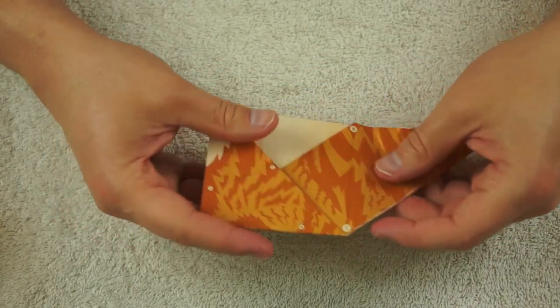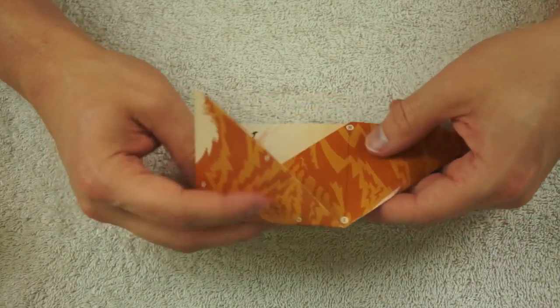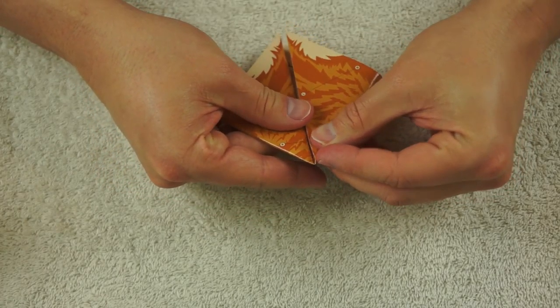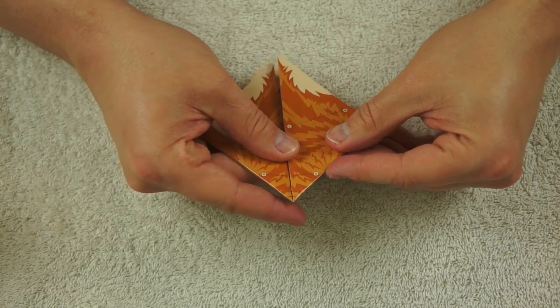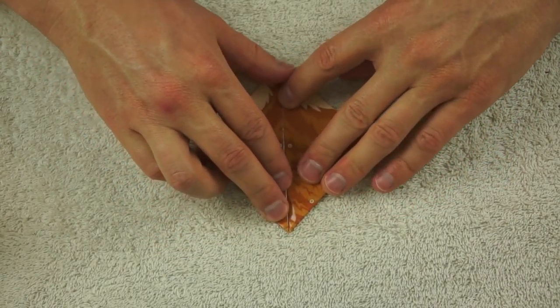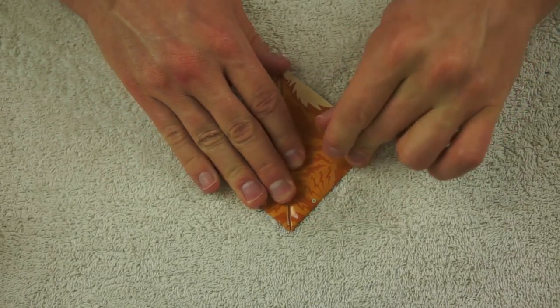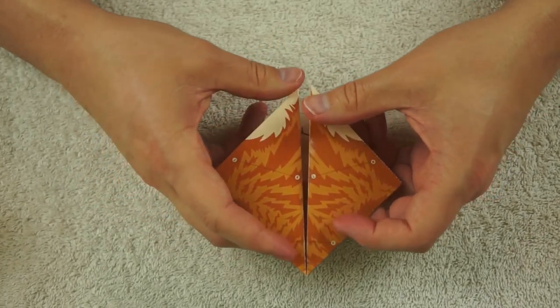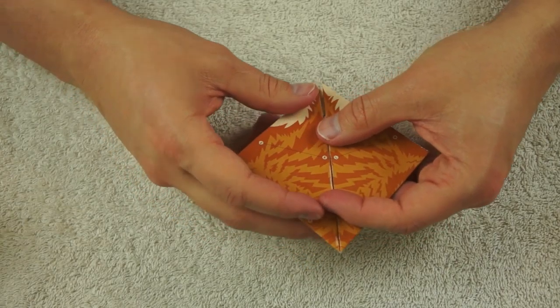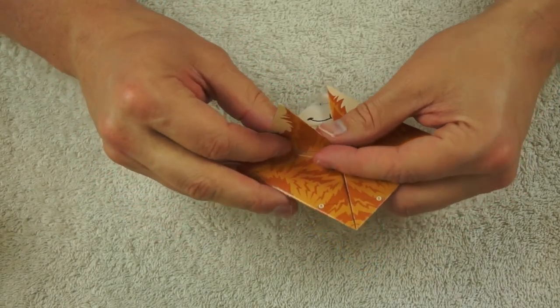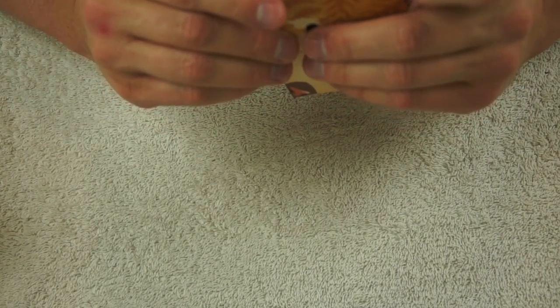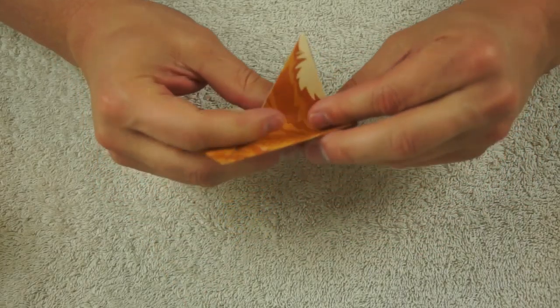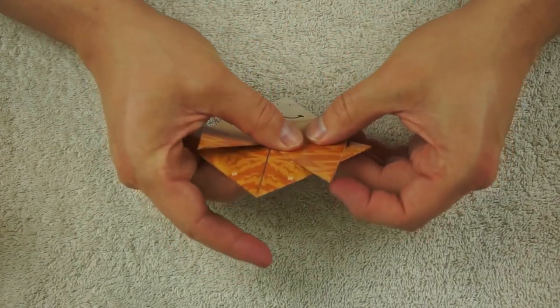And then the next one here, HI. So we'll do the same thing on the other side. Make sure all of this lines up fairly evenly. Now fold on the line JK and LM, like that.